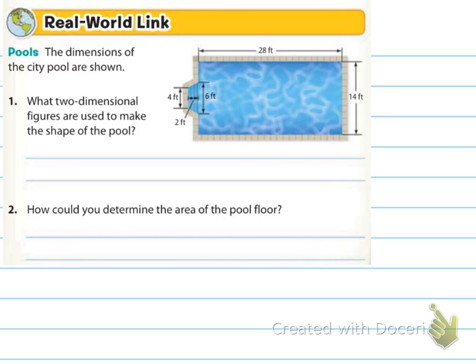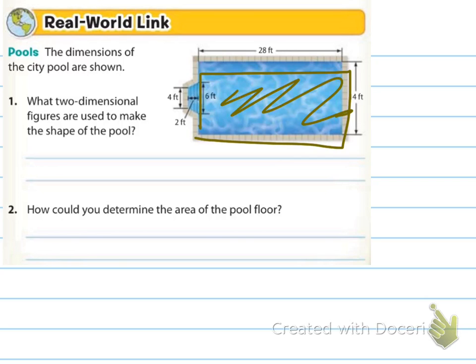I'd say trapezoid and rectangle. How could you determine the area of the pool? I would find the area of the rectangle, then find the area of the trapezoid, and that would be the area of the entire pool.